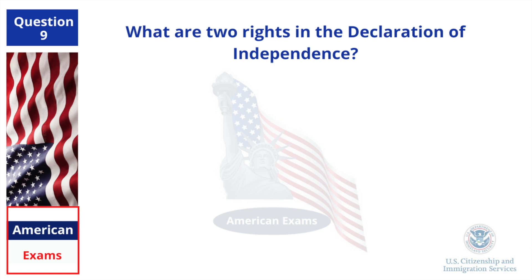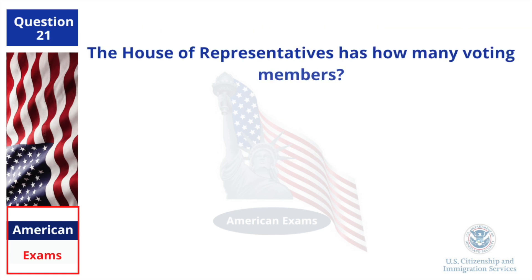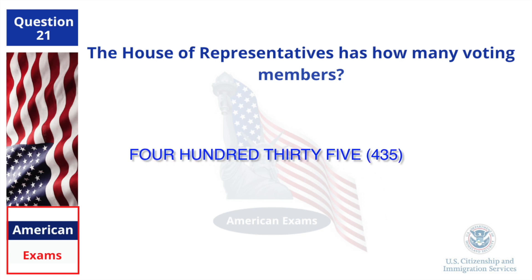What are two rights in the Declaration of Independence? Life. Liberty. The House of Representatives has how many voting members? 435.